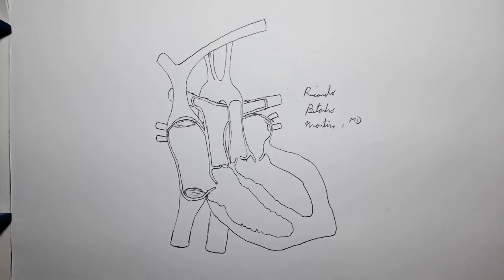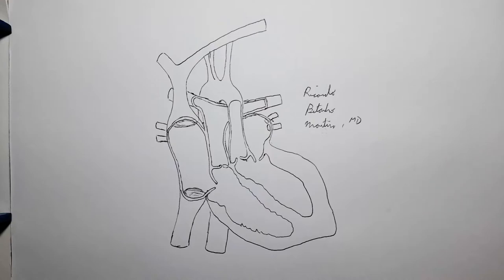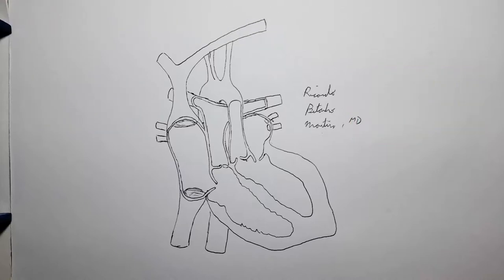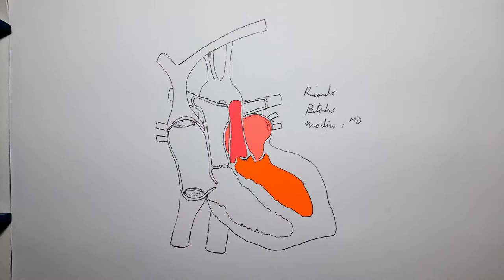This brings up the question: what exactly is the problem? After all, that's why it's called congenitally corrected transposition of the great arteries — because even with the mismatch between heart chambers and vessels, we still have working, operational systemic and pulmonary circulations.